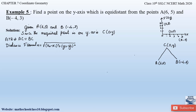Applying the distance formula to AC, let us assume point C to be (x₁, y₁) and point A to be (x₂, y₂). So AC = √[(6 − 0)² + (5 − y)²], where x₂ − x₁ = 6 − 0 and y₂ − y₁ = 5 − y.